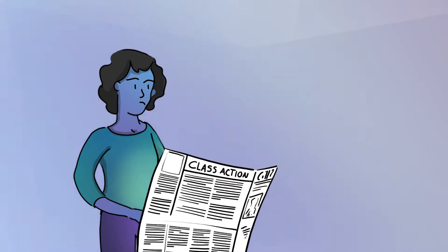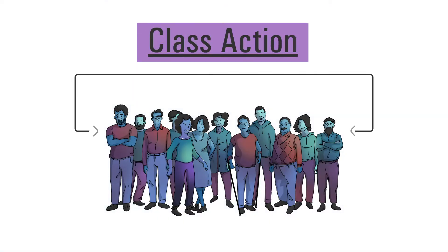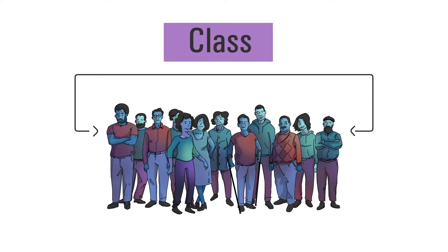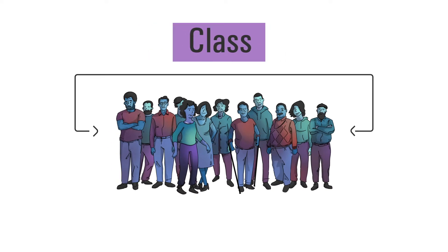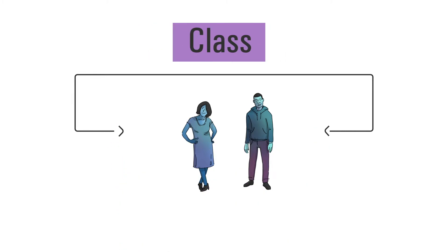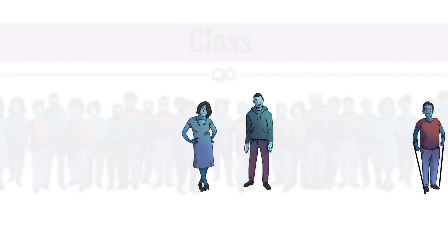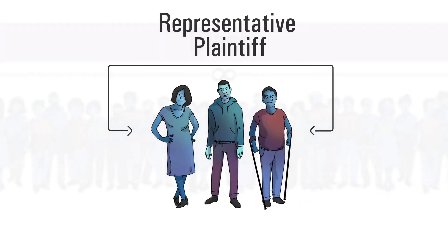Is she going to get any of her money back? A class action is a procedure that allows a group of people who have the same legal problem to get together and sue at the same time. This group of people is called the class. A class must include at least two people, but there is no limit to how many people can be in a class. The class is represented by one or more individuals who volunteer to be a representative plaintiff.